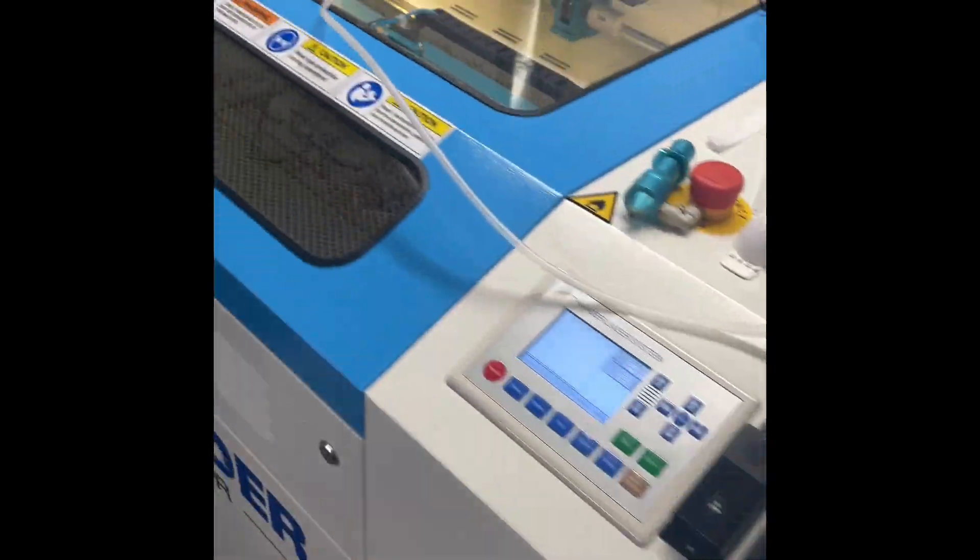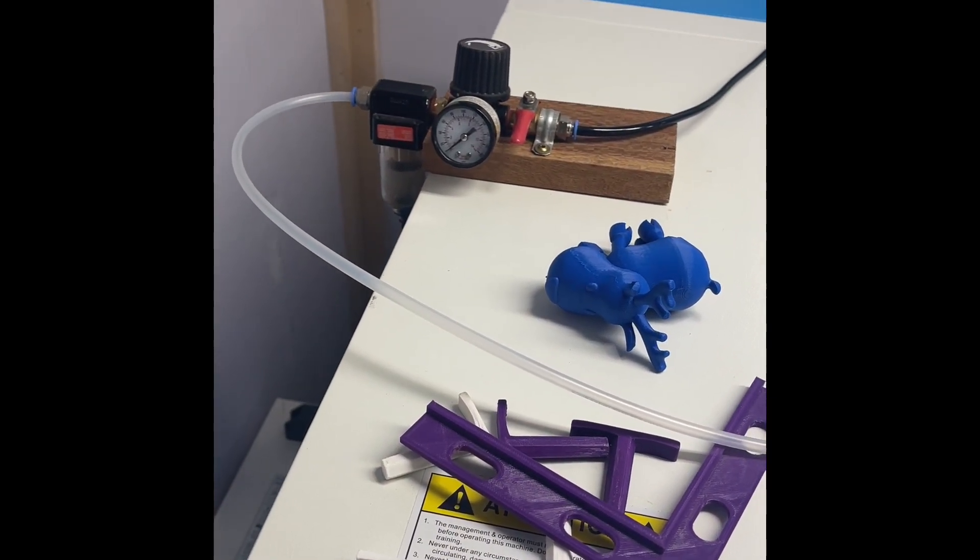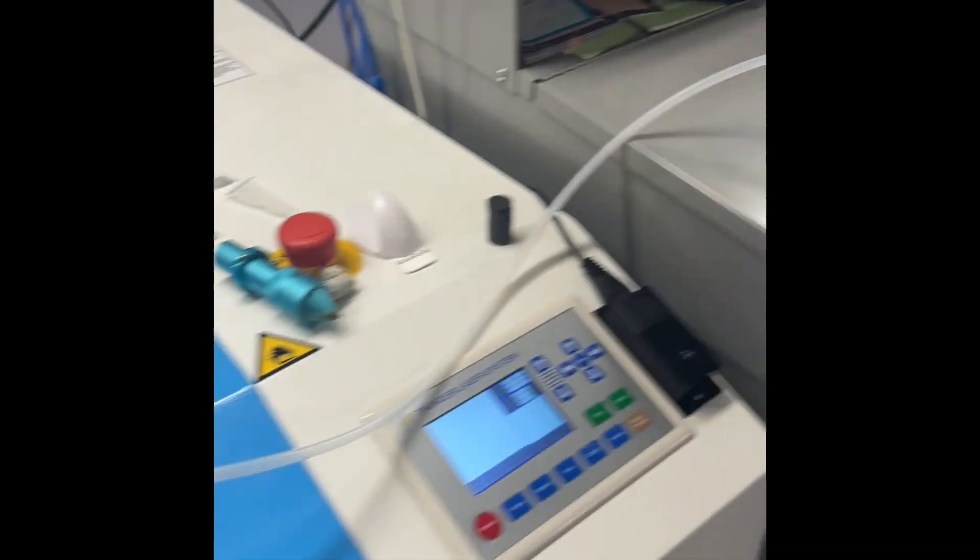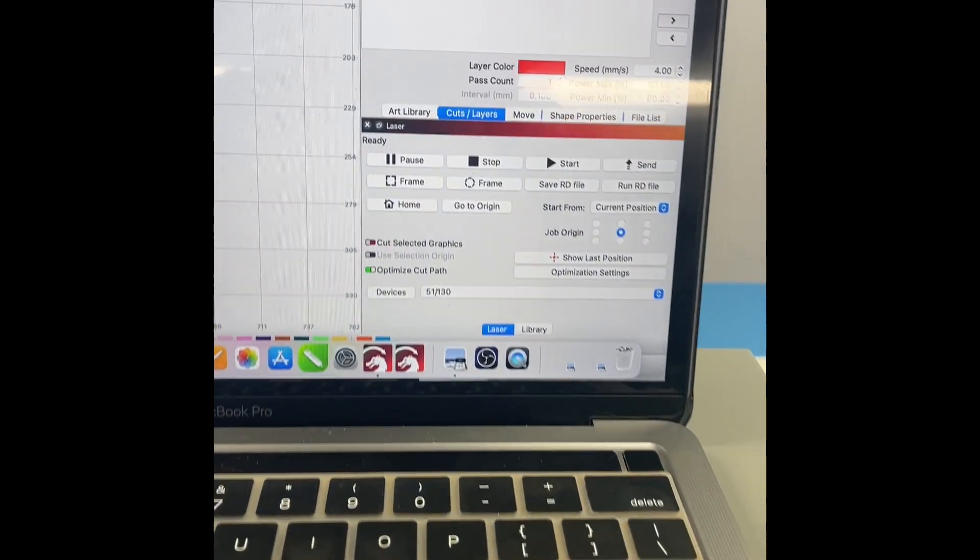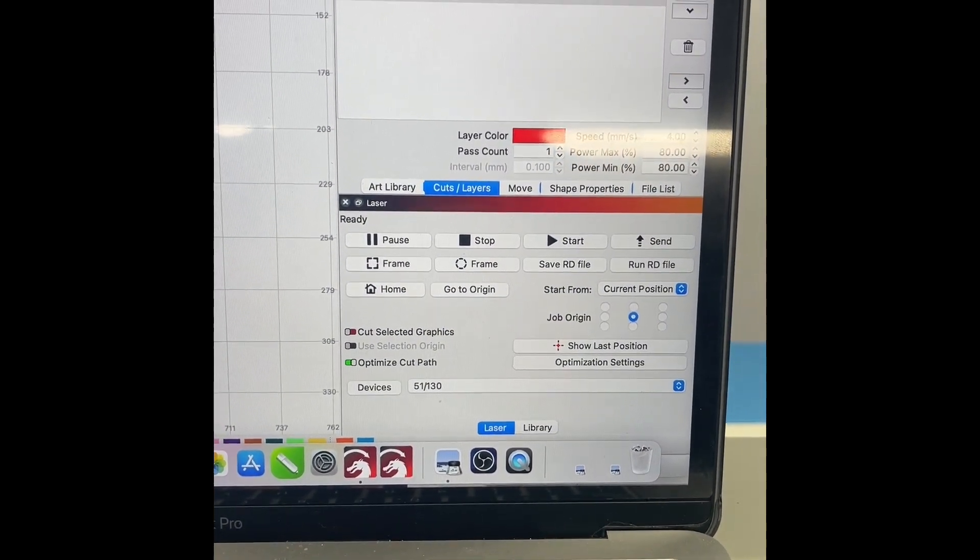You see my air tube. I run it through the side and I run straight over to a regulator. We're going to start today with 40 PSI. On our cut, our settings are going to be 4 millimeters a second with 80% power.